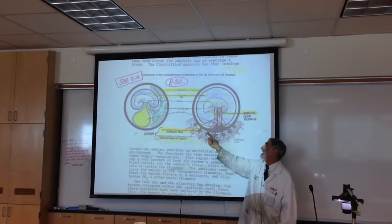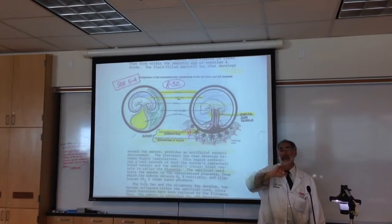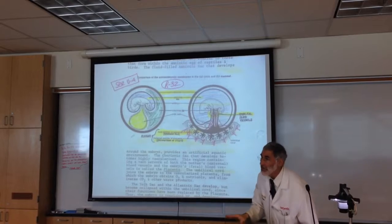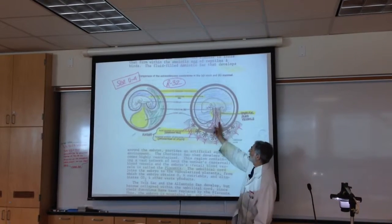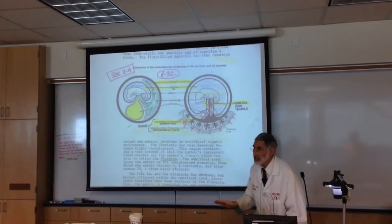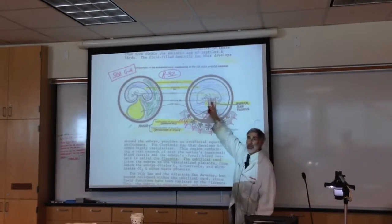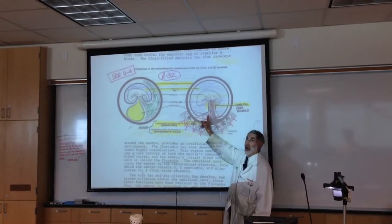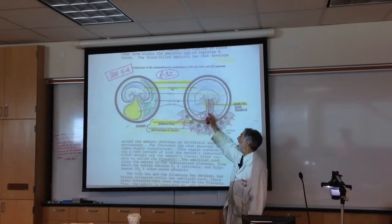Inside the umbilical cord is a collapsed yolk sac that, as far as we're concerned, has no function. And the collapsed Allantois sac inside the umbilical cord that, as far as we're concerned, has no function. Because the baby, the human baby, doesn't get its nourishment from a yolk, and it doesn't store its waste in an Allantois sac.